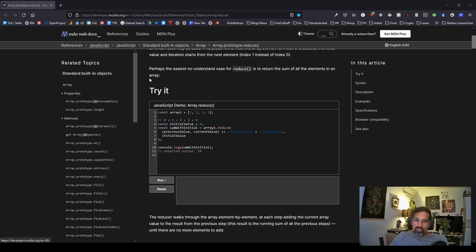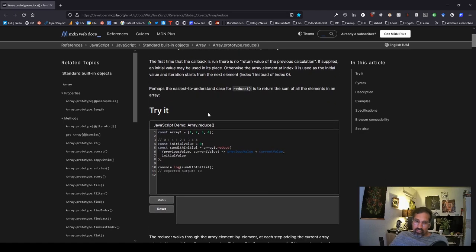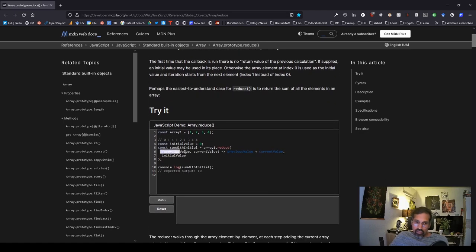So I opened up the MDN WebDocs which is a really great documentary about several when not all basic functions on all standard built-in objects in JavaScript. In this case we are going to the reduce function as I told before and it does nothing more than to apply a certain function you can define yourself. In this case it's a simple summation to an array.